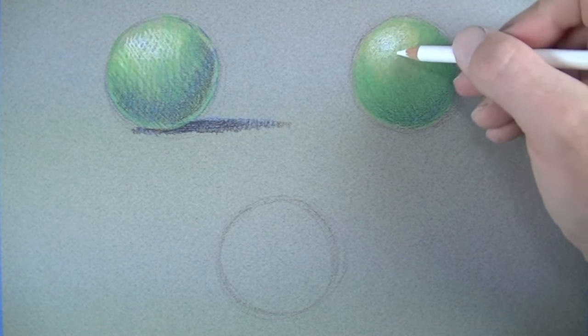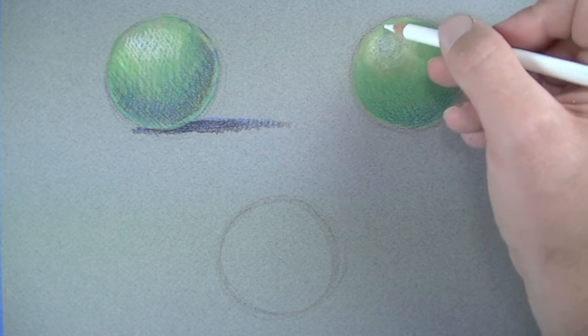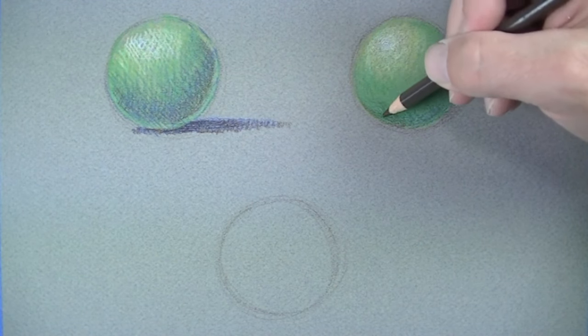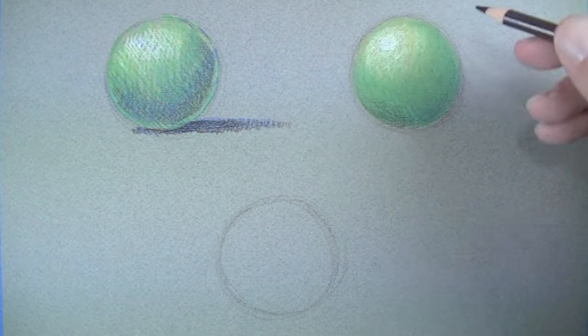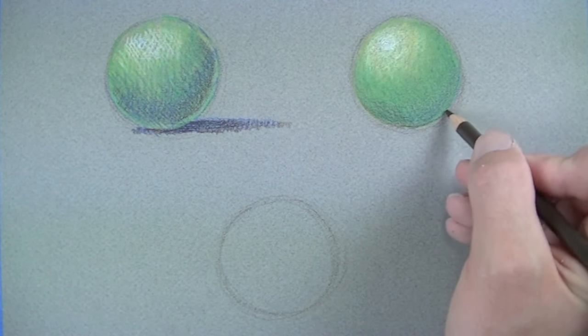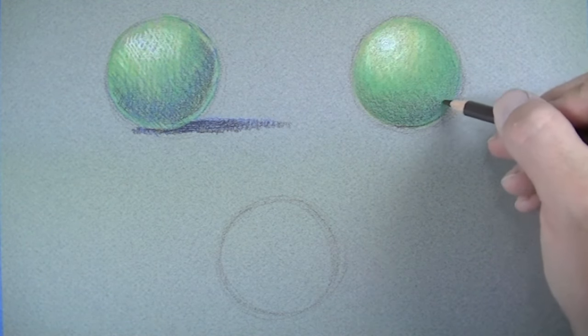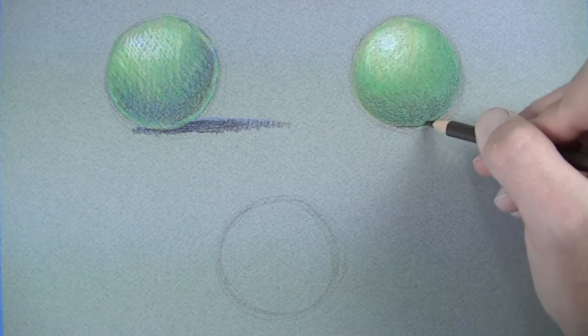As layers are added to the drawing, the surface will become more waxy because of the binder in the pencil. This allows for a process called burnishing, which creates smooth transitions of value and color with the colored pencils. Depending on the tooth or texture of the paper, the more layers you may have to add. A stronger tooth or heavier texture will force you to put more layers to get to that burnishing stage.